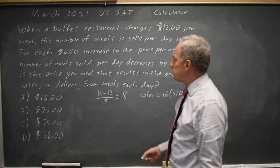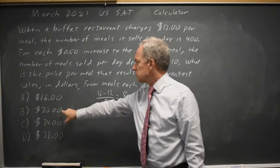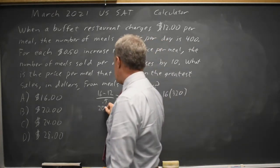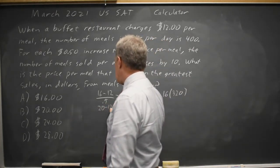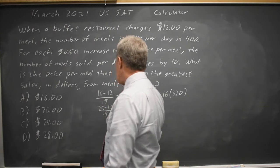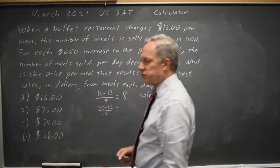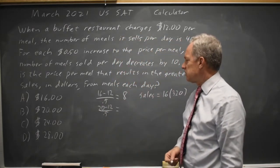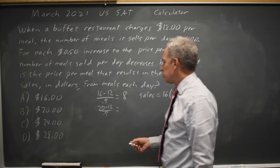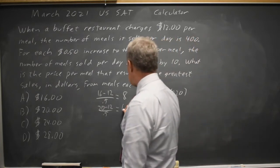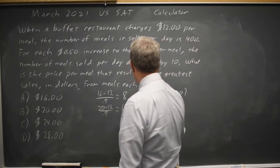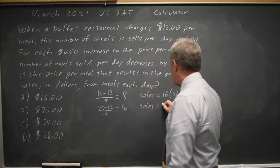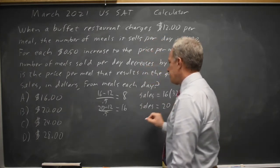For $20, that is 20 minus 12 over 0.5, which gives the number of additional 50-cent charges. That is 8 over 0.5, which equals 16.